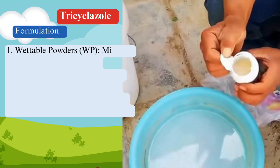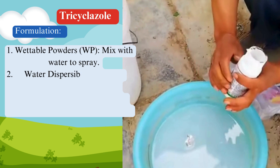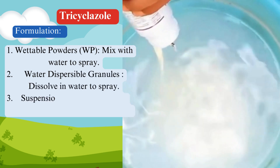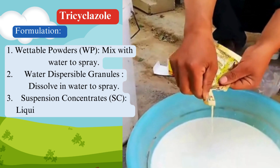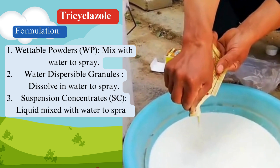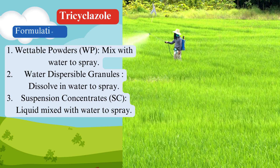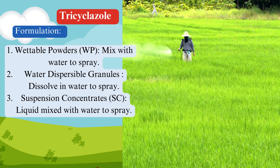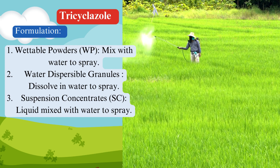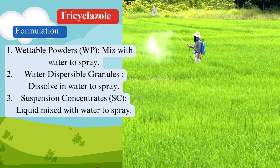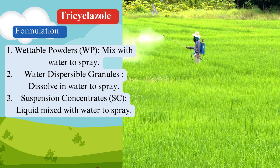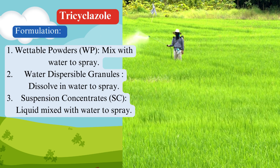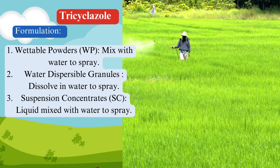Common Formulations: Tricyclozol is available in several formulations to suit different application methods. These include wettable powders, which are mixed with water to form a suspension that can be sprayed on crops; water dispersible granules that dissolve in water to form a sprayable suspension; and suspension concentrates, which are liquid formulations mixed with water for application.